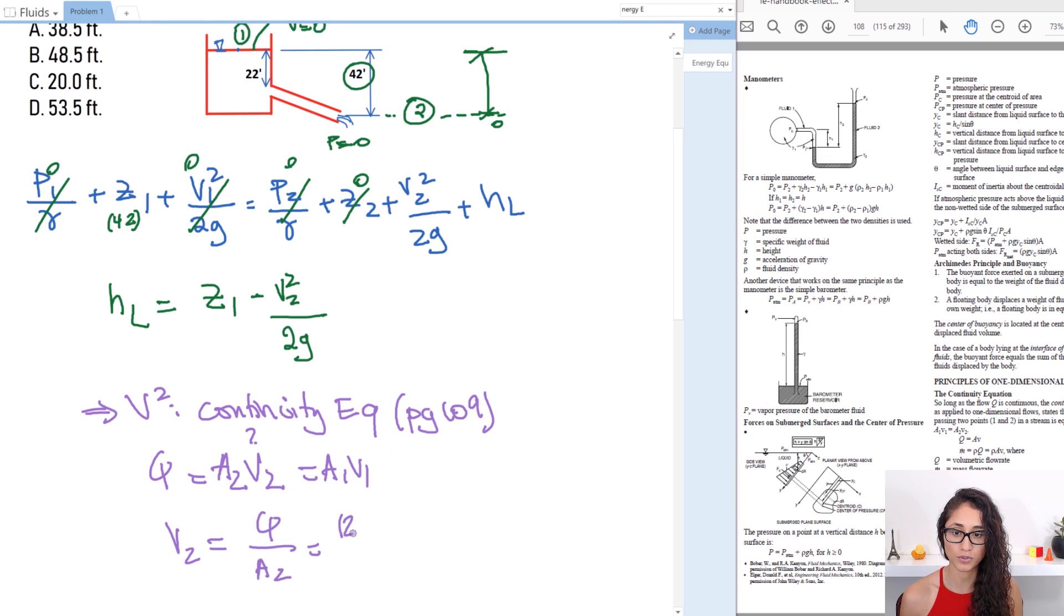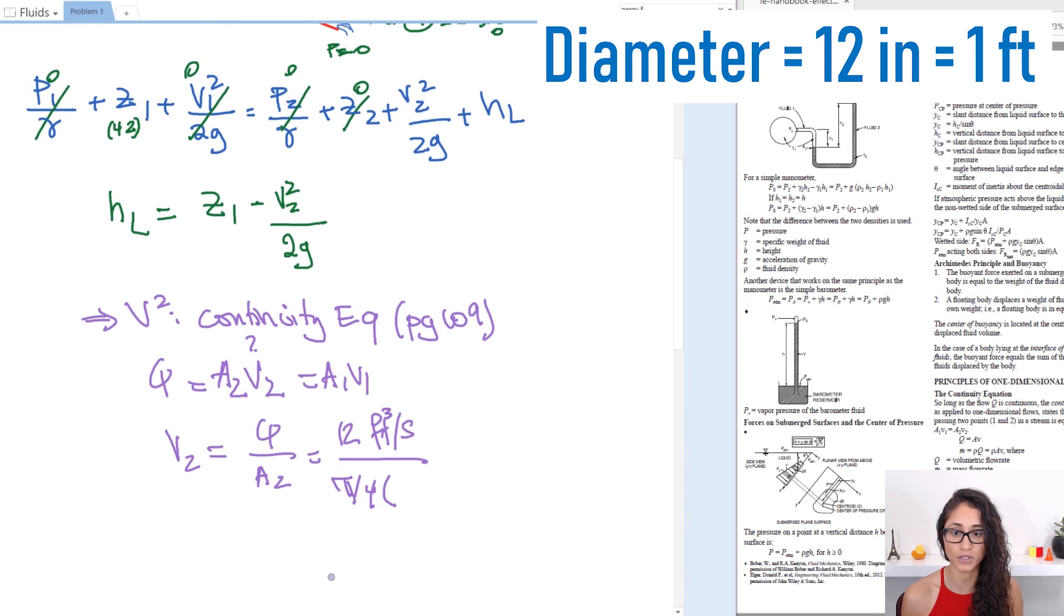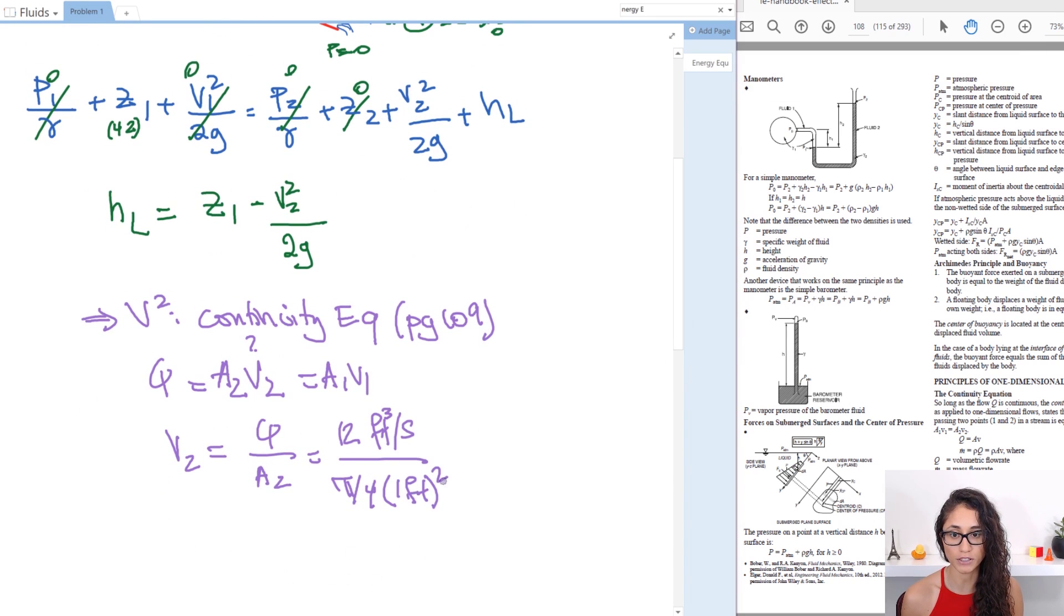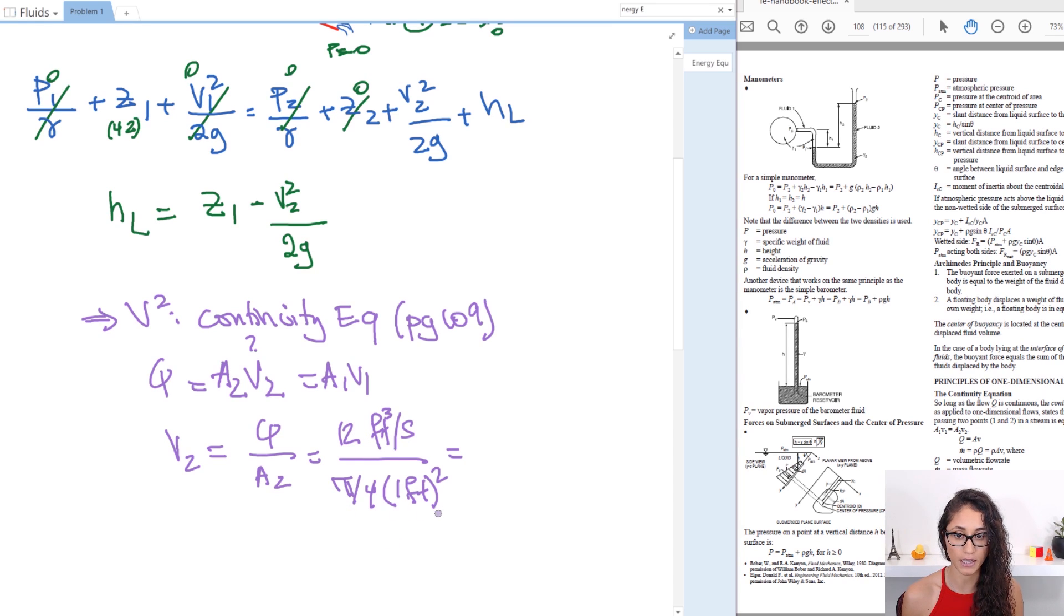Q was given at 12 cubic feet per second and the diameter is given as 12 inches so we have to convert that into feet which is one foot. Now notice here I use the area for a circle because we have a pipe so it's a circular shape and that's why we use pi over four times d squared. Now if you plug this into your calculator you will get an answer of 15.3 feet per second. Note how the units cancel out so we have cubic feet with feet squared you're left with foot which is exactly the unit we need. So it's good to keep track of the units I always say this in my videos because then if you did something wrong you can notice it just by canceling out your units.